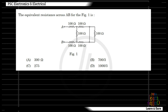The equivalent resistance across AB for the figure — we will identify the network. These two points are short-circuited. The current will flow through this short circuit path. This is not the same as the 100 ohm resistor in this network.